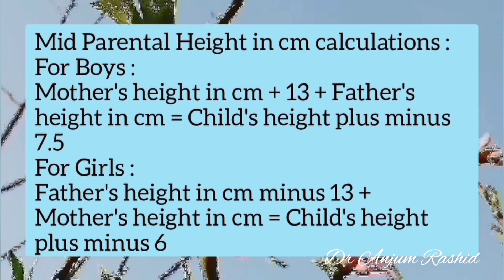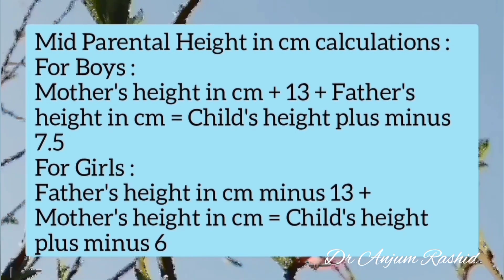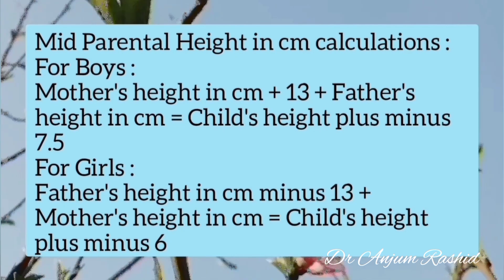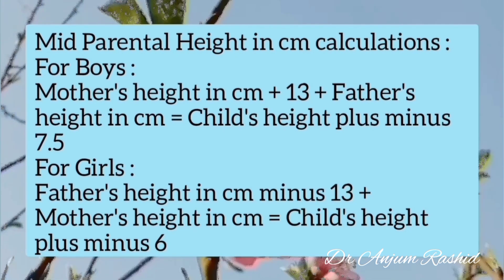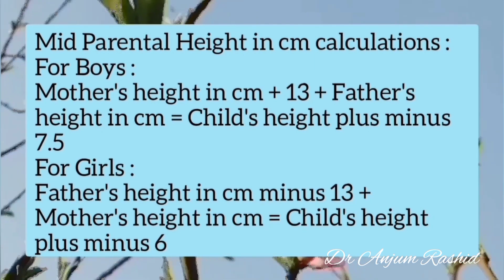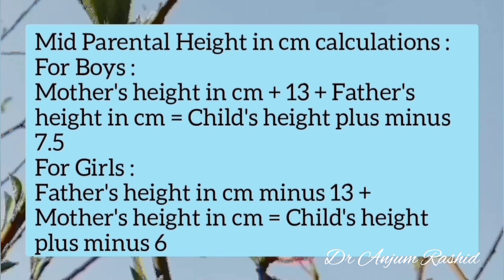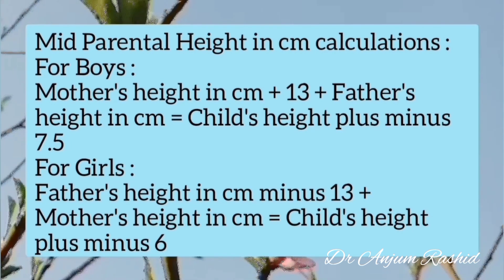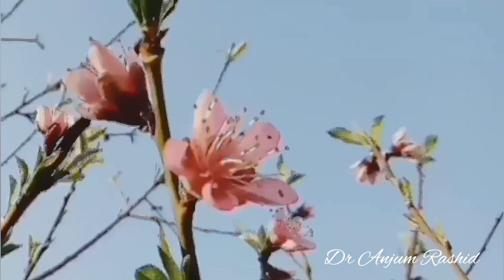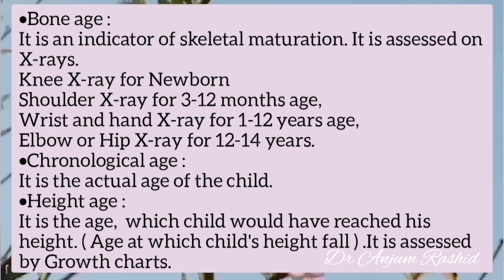Mid-parental height calculations in centimeters: for boys, (mother's height in cm + 13 + father's height in cm) = child's expected height ± 7.5 cm; for girls, (father's height in cm − 13 + mother's height in cm) = child's expected height ± 6 cm.